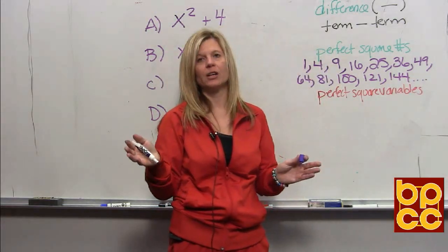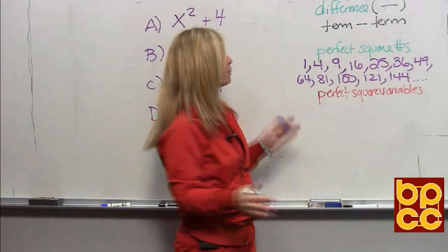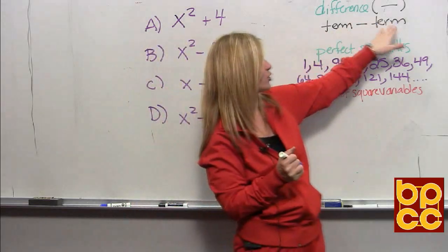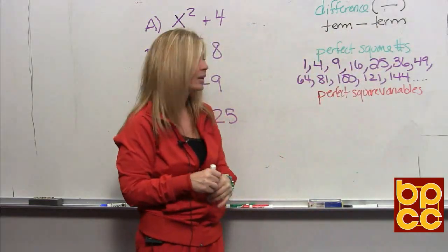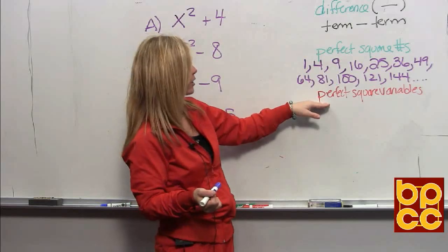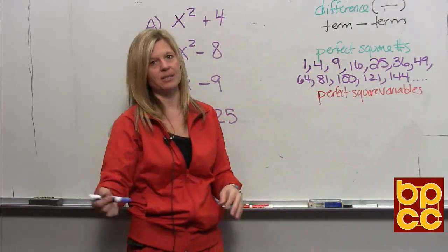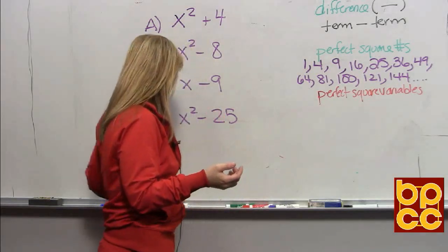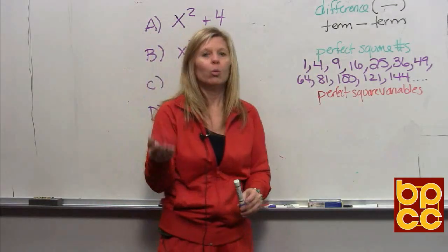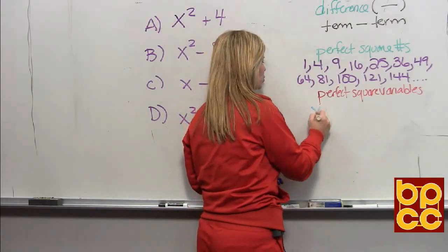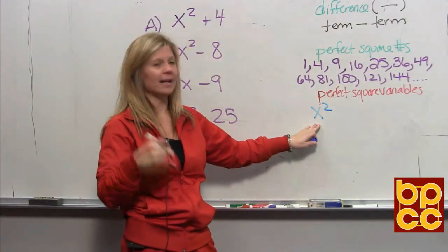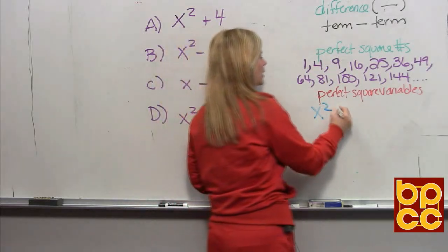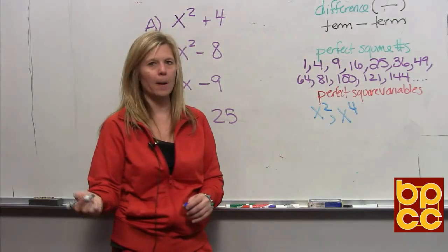In your class notes I've given you the full list of the first twenty, but it's important to know that to do today's factoring rule, you can only have these numbers in the terms. A perfect square can also be a variable — a letter times itself. What is x times x? That's x squared — that's a perfect square, something times itself. And x squared times x squared is x to the fourth — that's also a perfect square.